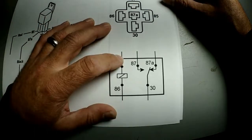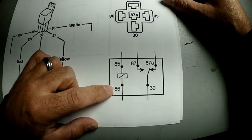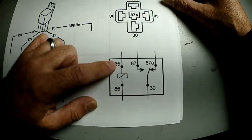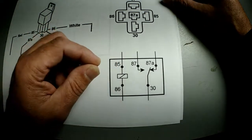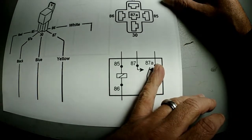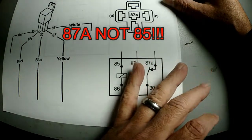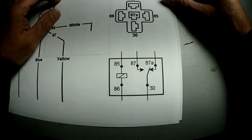Right here we have 85 and 86. This is simulating a coil. When these two get power and ground, they create an electromagnetic charge which flips this switch from 87A to 87. Let me show you on one I've taken apart.